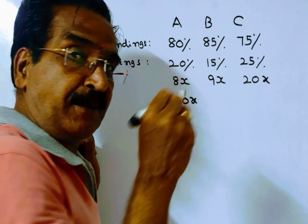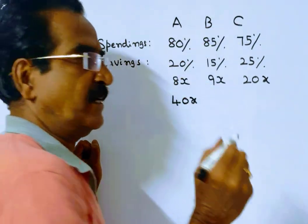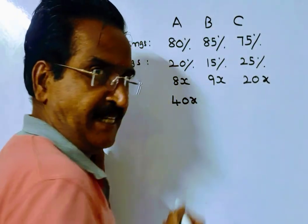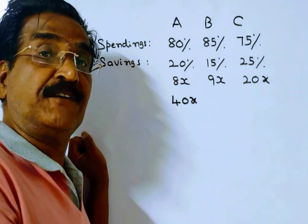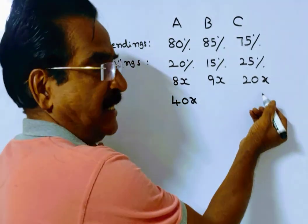C saves 25% of his income. Actually, C's savings are 20x. So 25% of C's income is 20x.